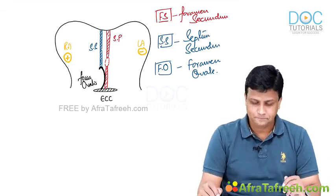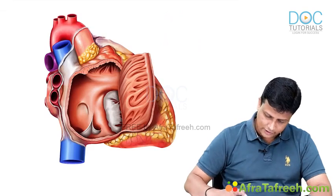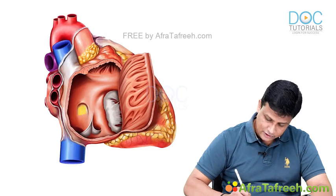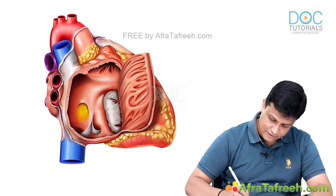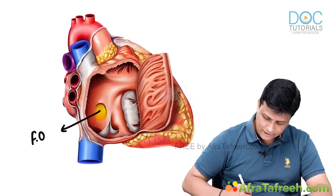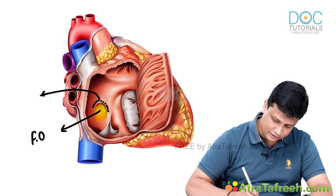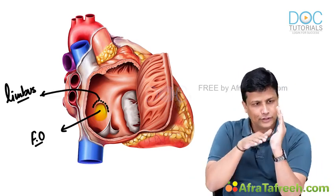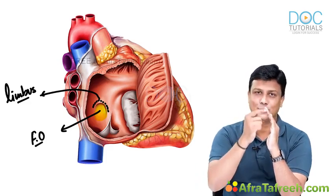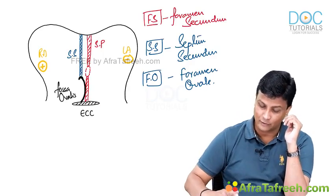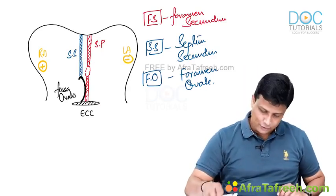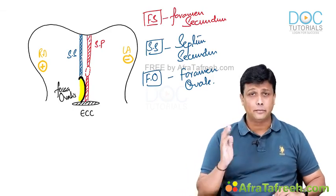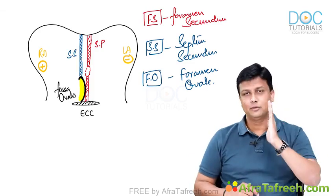If you look at this diagram showing the interior structure of the right atrium, you can appreciate a depression — that is fossa ovalis — and just above it, the margin known as limbus fossa ovalis. Now you need to learn what forms the floor of fossa ovalis and what forms the margin. Looking at the floor, it is formed by the red-colored septum primum, whereas the margin above is formed by the blue-colored septum secundum.